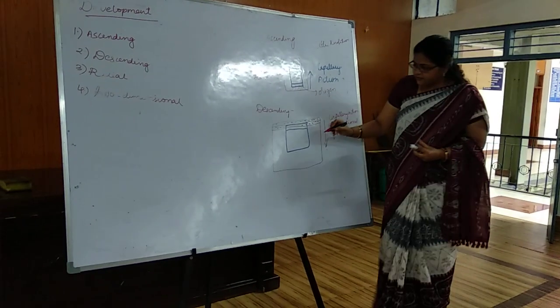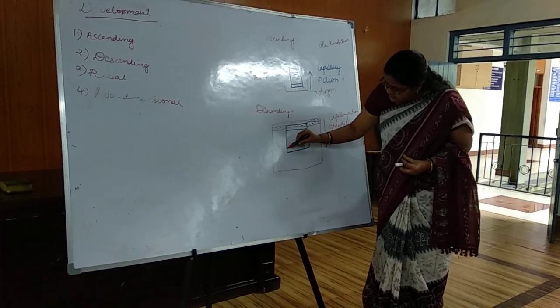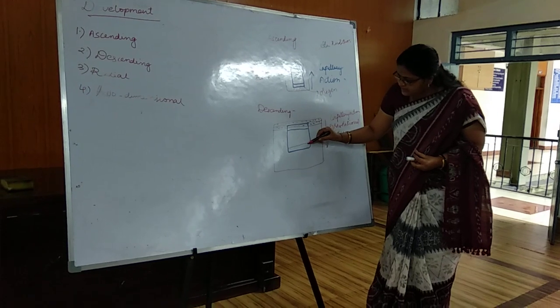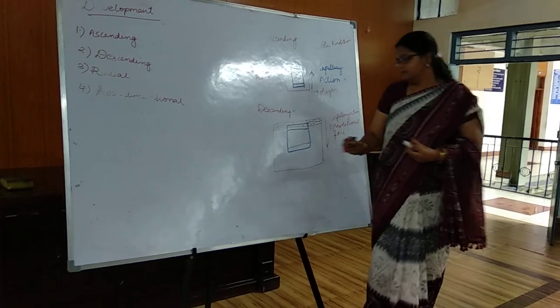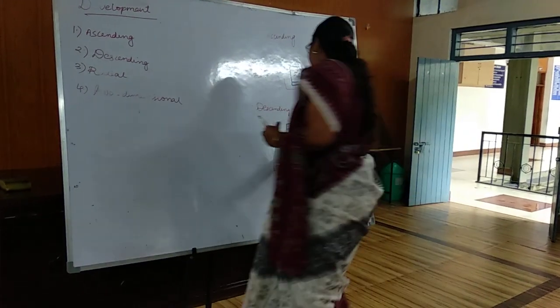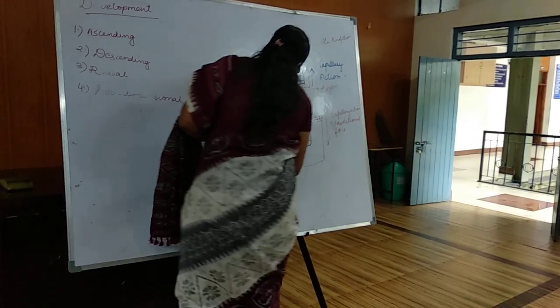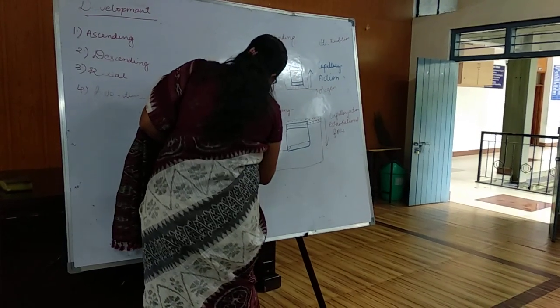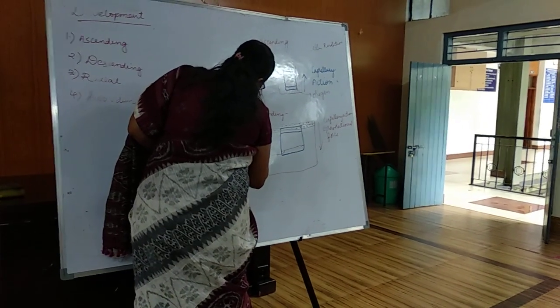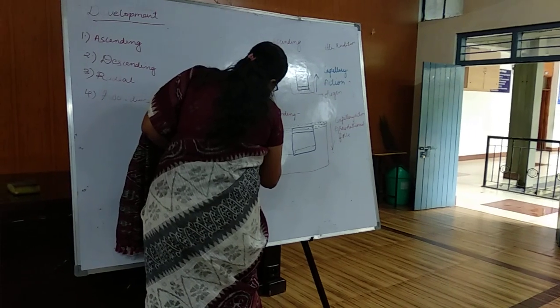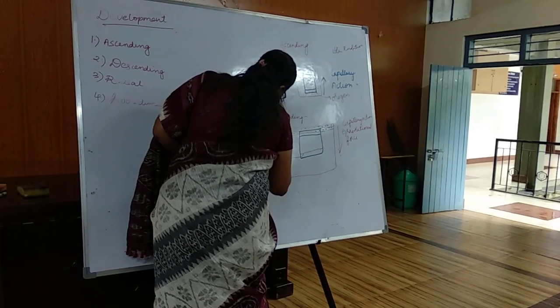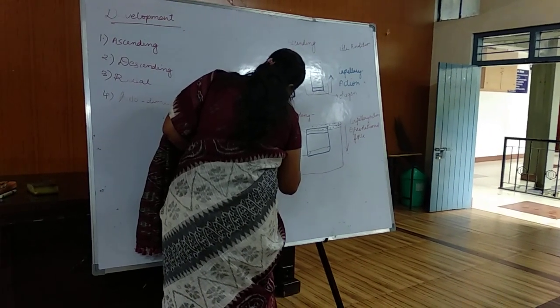Descending development occurs very quickly. However, you get better resolution in ascending chromatography compared to descending chromatography. The point up to which the mobile phase travels is called the solvent front.